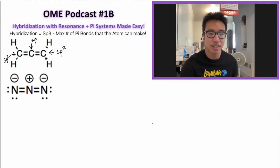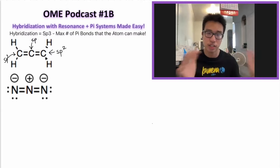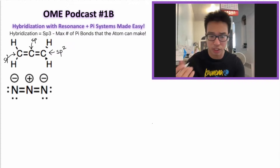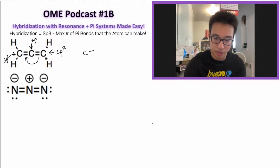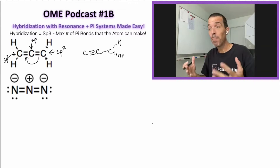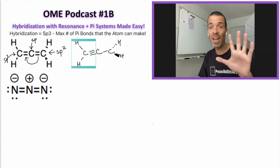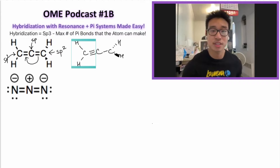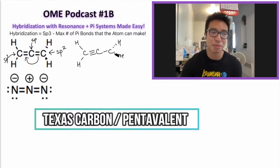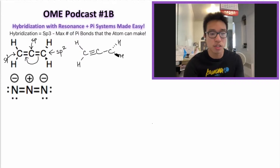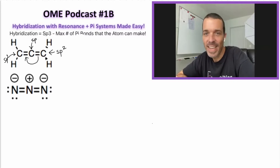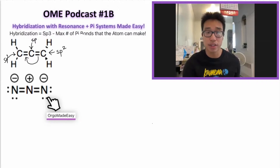Can the pi bond on the right resonate left to create a resonance structure and change the hybridization? If we draw the arrow, it looks good, but the problem is that carbon would have five bonds — exceeding the octet with 10 electrons. That's a pentavalent carbon — also called a 'Texas carbon.' That's not a valid resonance structure. So no secret resonances here: left carbon is sp2, central is sp, right is sp2.